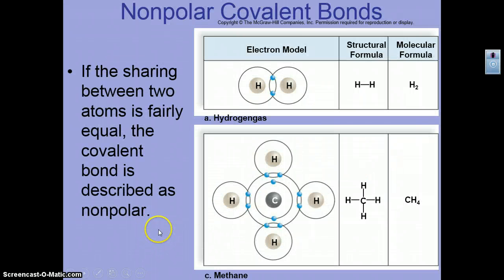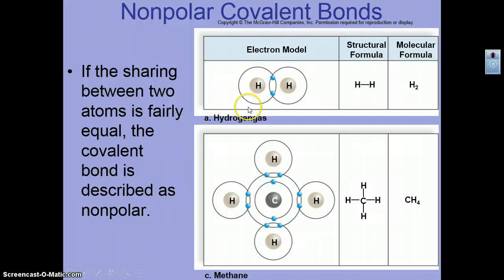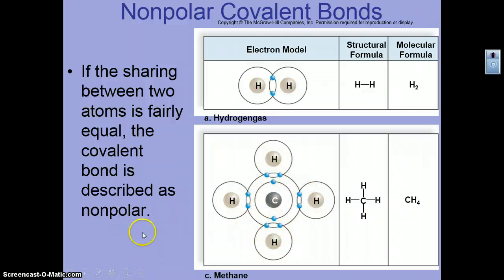In nonpolar covalent bonds, the sharing between atoms is fairly equal. With hydrogen, the electronegative values are about the same, so the pull is equal. The carbon-hydrogen bond in methane is also approximately equal, making it nonpolar covalent.